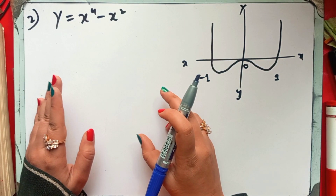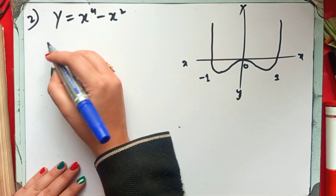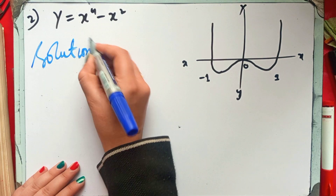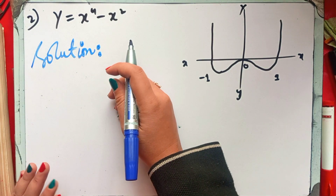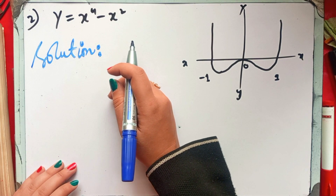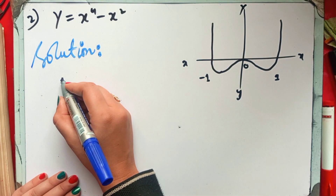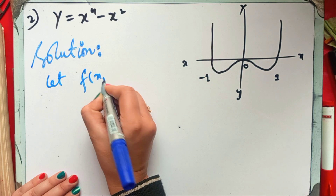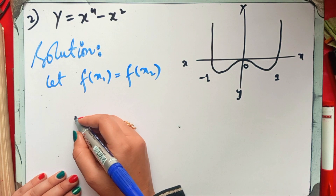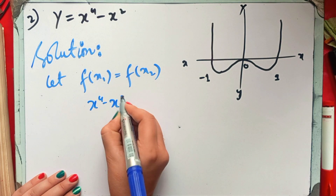We will solve the problem in a good way and have no doubts. Subscribe to this channel if you haven't yet, because here we are learning high-level math topics like BS Maths and BS Engineering. So let's go — first step. We will work with two functions: f(x₁) and f(x₂). Our function is x⁴ - x².